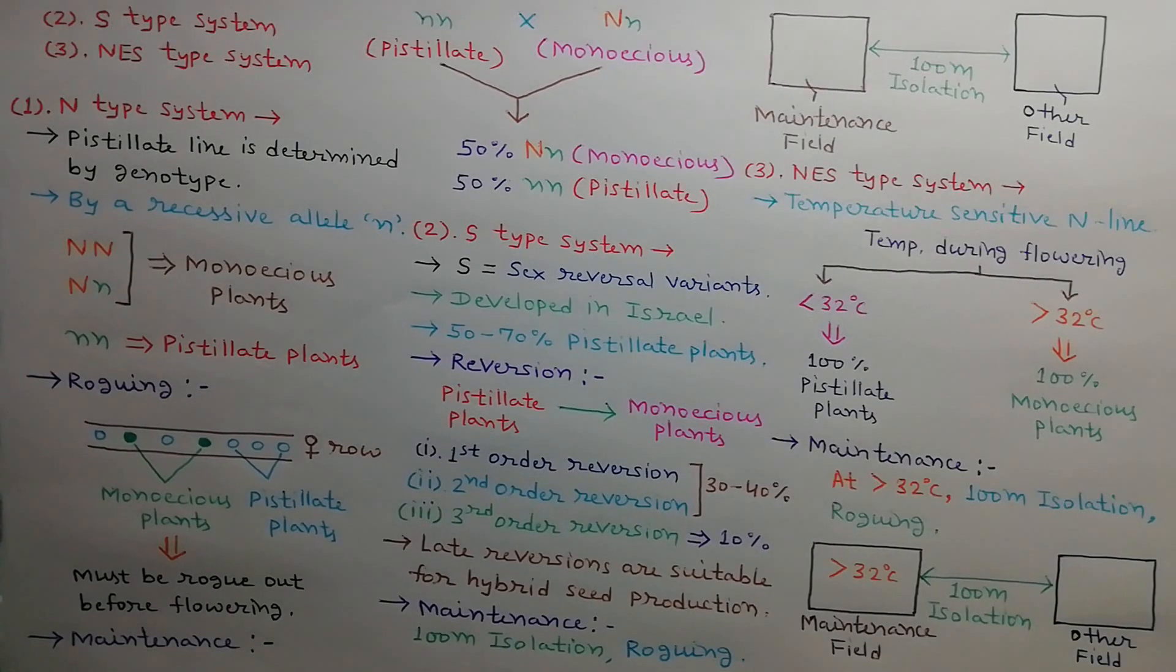These lines are maintained in summer season by growing in field with 100 meter isolation. Roguing should be done to remove off-type plants. This system is best suited for hybrid seed production.